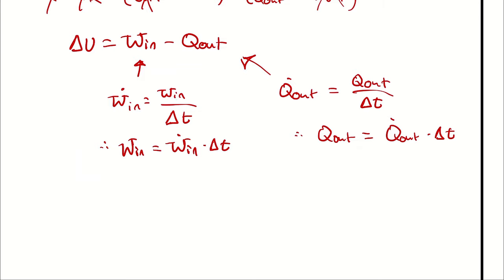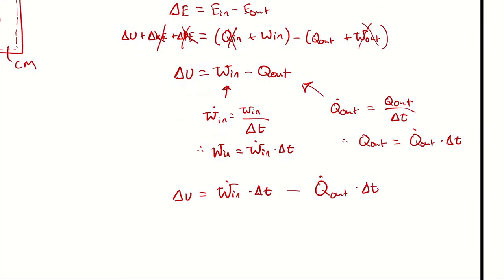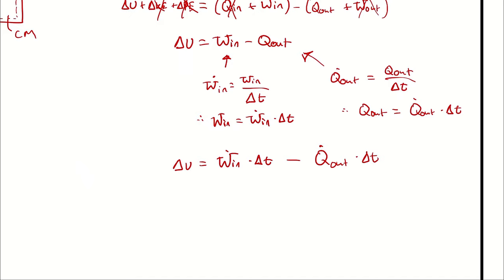When I make those substitutions, I have delta u is equal to w dot in times duration minus q dot out times duration. And I'm going to factor out duration, leaving me with delta t times power input minus rate of heat transfer rejected.